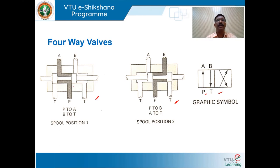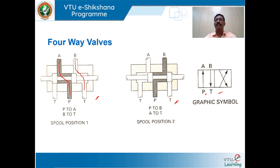In spool position one, P is connected to A and B is connected to T. That is, the pump line connects with output port A and output port B connects with the tank line. A line with an arrow denotes the flow direction, so P is connected with A and B is connected with T.